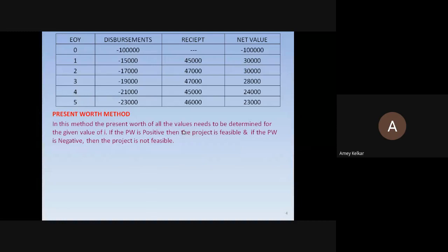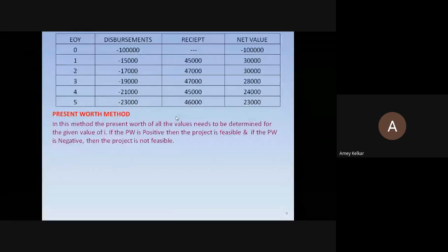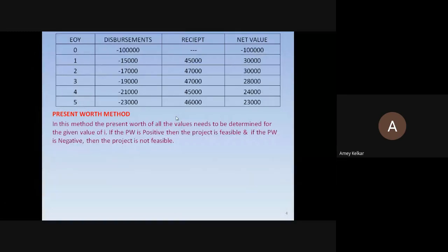Note that this is not an annuity since the values are not equal. After year 1, the net value is 30,000; year 2 is also 30,000; year 3 is 28,000; year 4 is 24,000; and year 5 is 23,000. These net values are all future values except for the first one — the initial investment made at the present moment — so we must convert all of them using the present worth method.